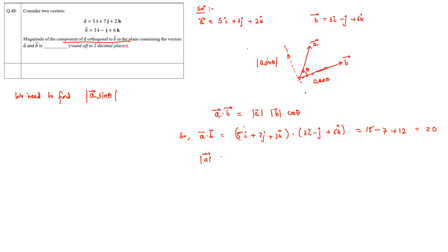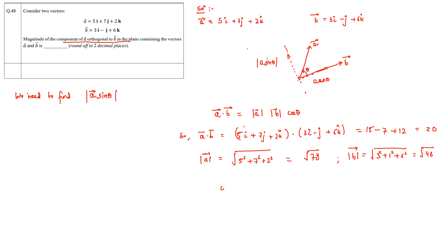The magnitude of a is √(5² + 7² + 2²) = √78. The magnitude of b is √(3² + 1² + 6²) = √46. Knowing these, we calculate cosθ = a·b / (|a|·|b|) = 20 / (√78 × √46).